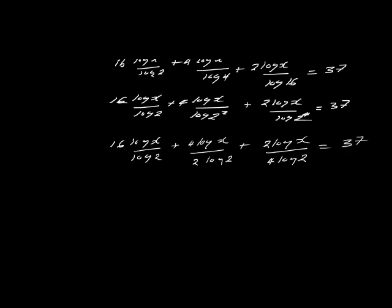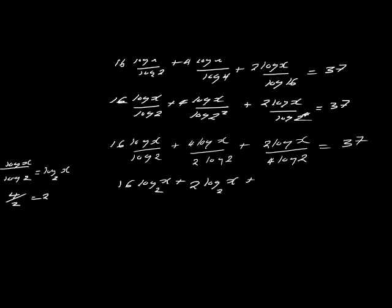We can now take it back — everything now has base 2. Everything on the left-hand side of the equation is to base 2. So log x over log 2 is simply log x to base 2. Where there is log x over log 2, we put log x to base 2. So all the terms on the left-hand side of the equation are now to base 2. That was the first step to ensure that all the bases are the same.